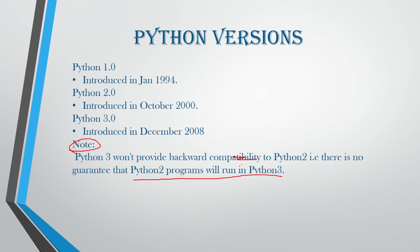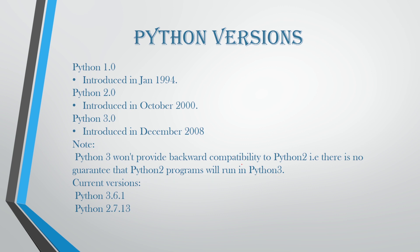The next is the current version. What are the current versions of Python that are running? The current version of Python is 3.6.1. Python 2.7.1 and Python 2.7.1.3 can also be run on devices.